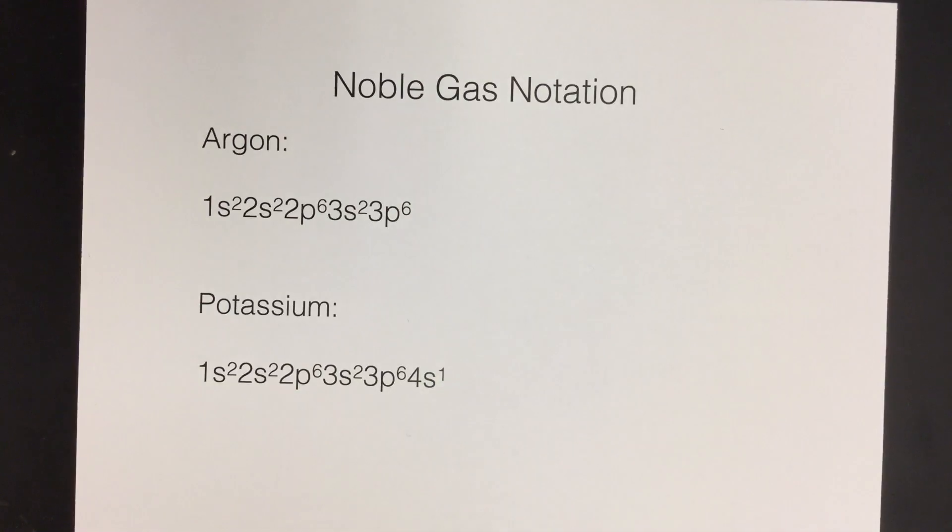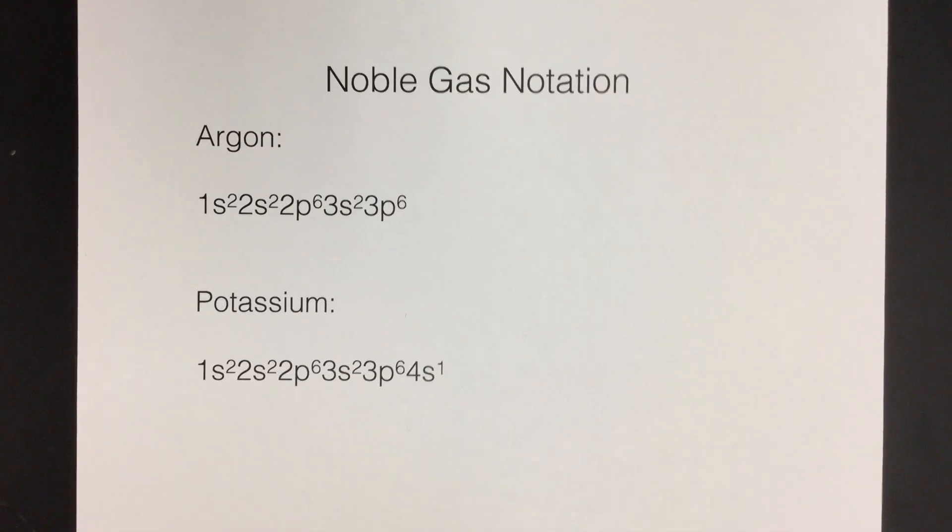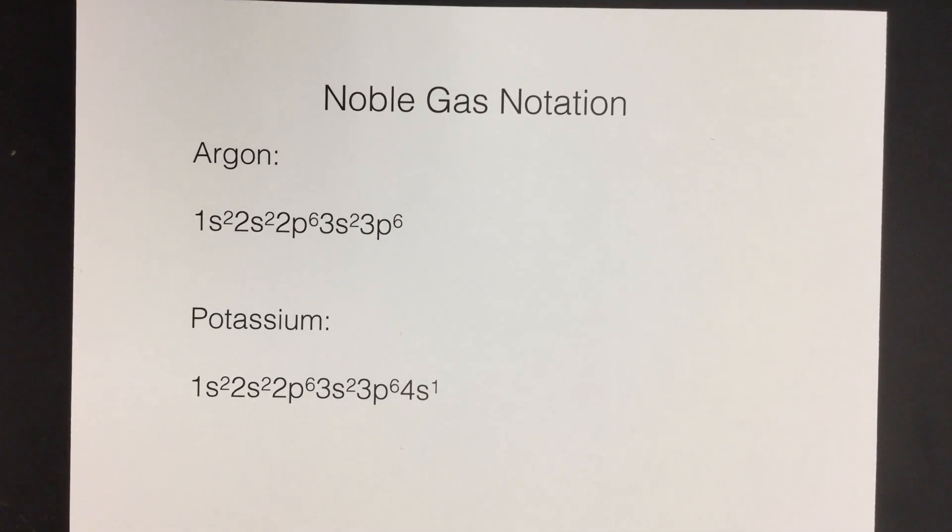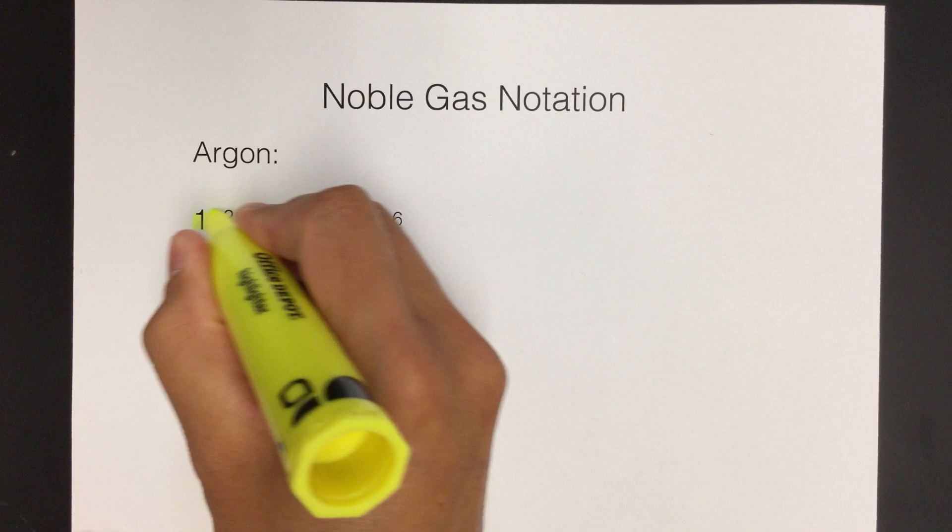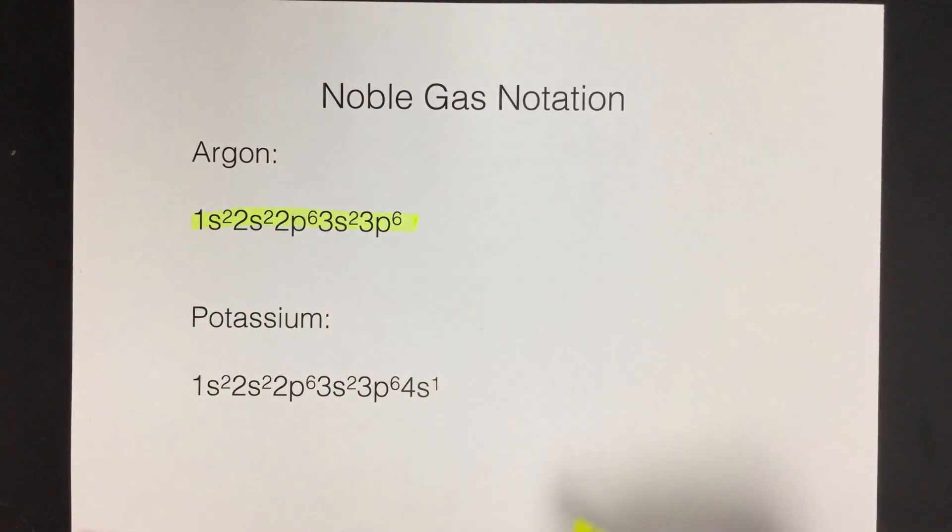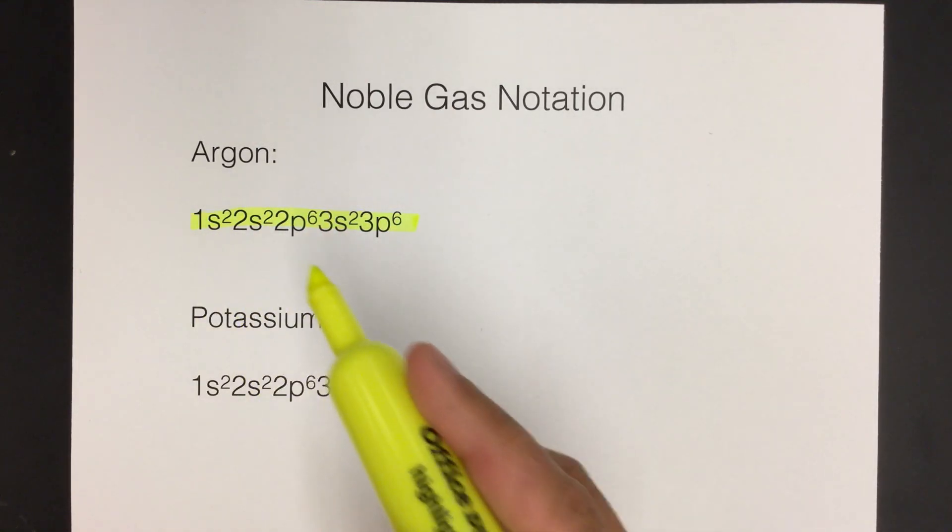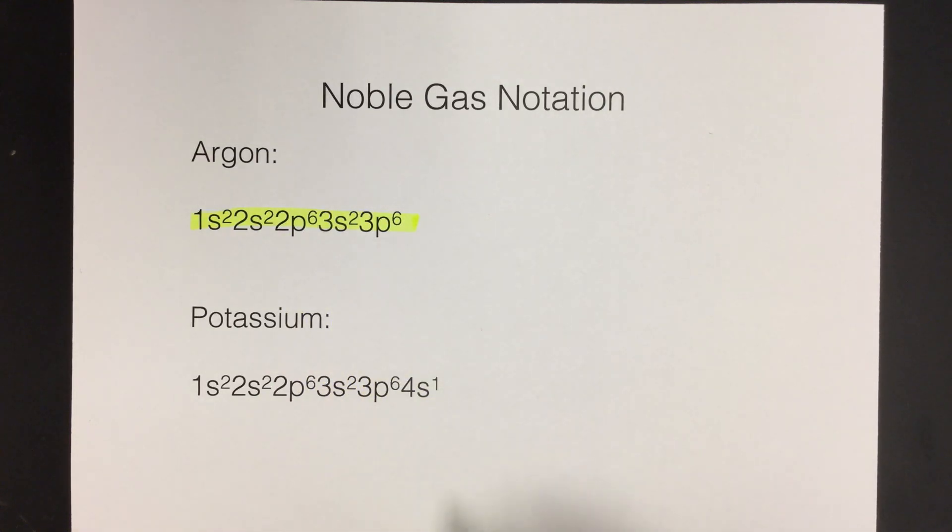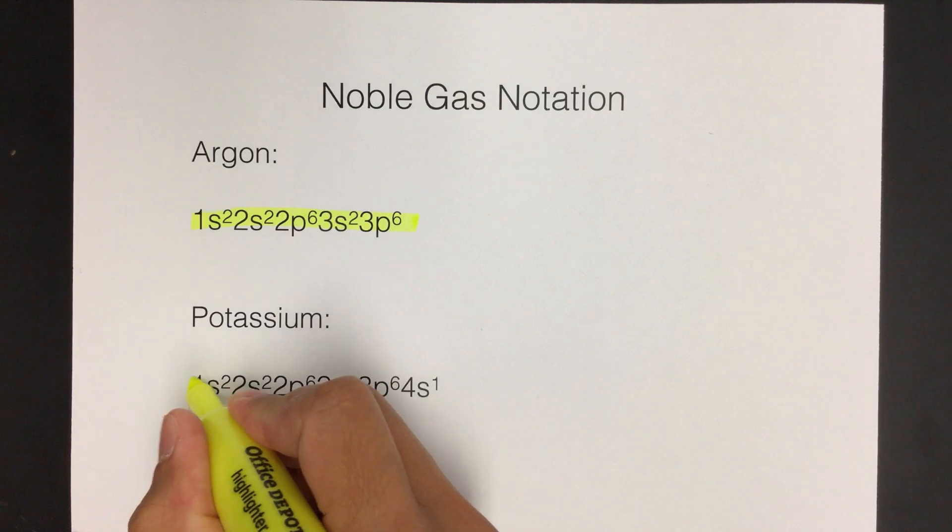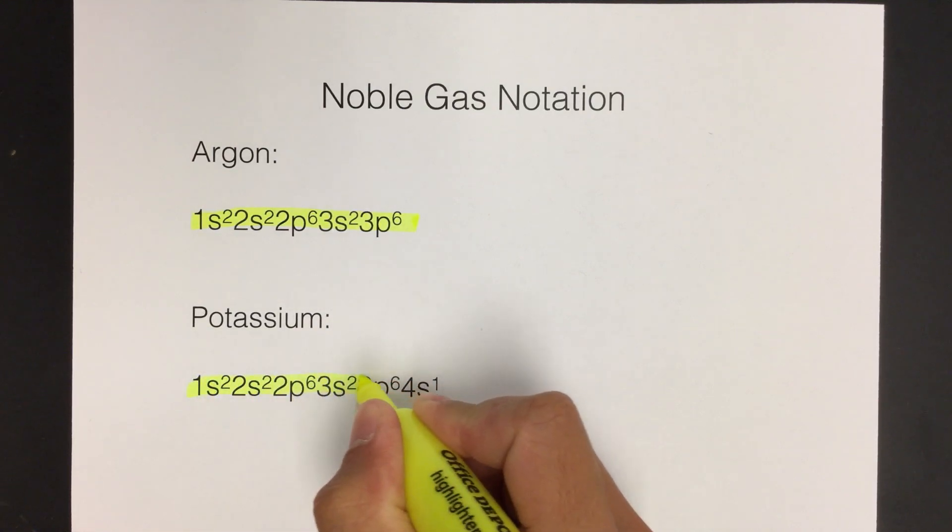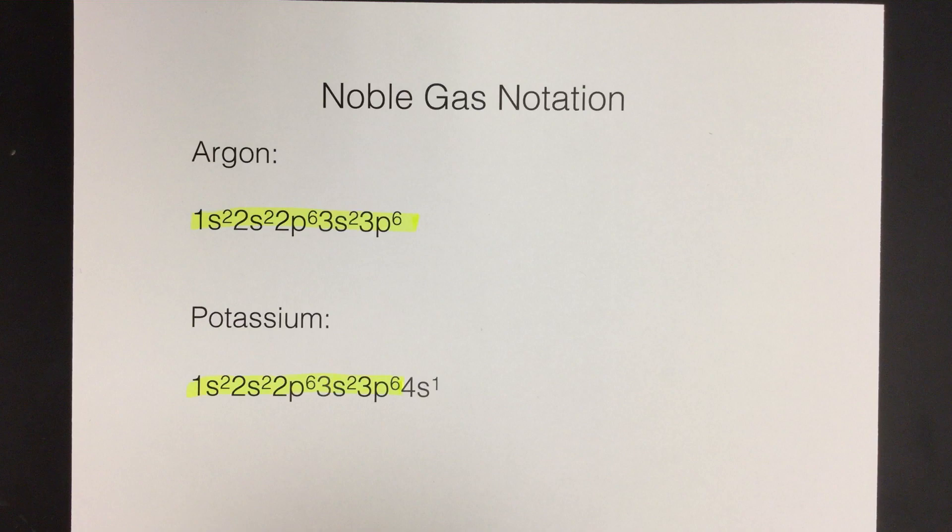Alright, and if you look at these, and you probably notice this in your homework, when you look at these there's a big similarity here. So if you look at argon's electron configuration, it goes 1s2, 2s2, 2p6, 3s2, 3p6, you see that exact same sequence in potassium up to there. 1s2, 2s2, 2p6, 3s2, 3p6.